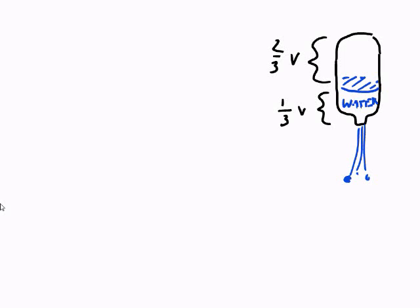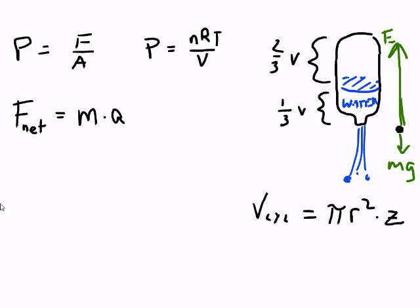Let's take a look at our useful formulas. Pressure by definition is force over unit area, P = F/A. By the ideal gas law, pressure equals nRT over V. Another useful formula we're going to need is Newton's second law: F_net equals MA.